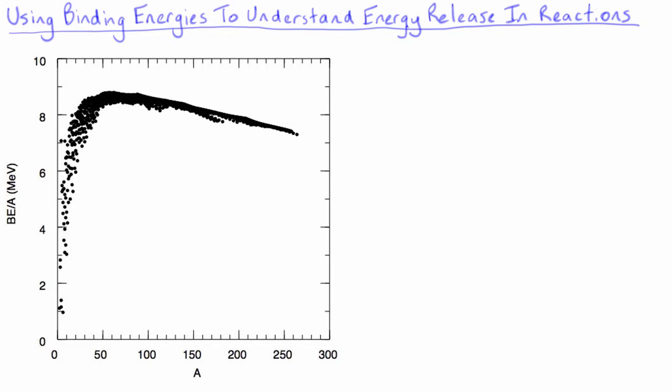Let's again look at the curve of binding energy per nucleon and use it to estimate the energy emitted when uranium-235 undergoes fission.